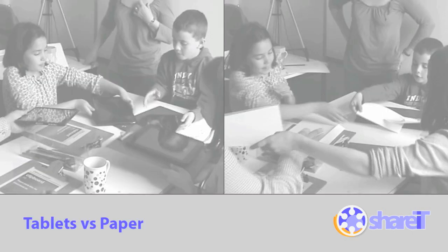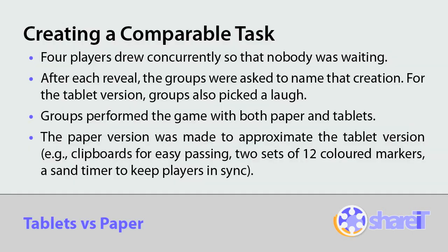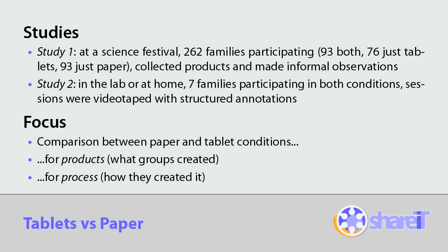We developed an iPad app based on that game and used it to compare tablet and paper use. We built on the Consequences game, having players draw simultaneously and including a naming task at the end, closely matching the tablet and paper versions. We conducted two studies of families playing both versions: the first at a science festival with plenty of players, the second a detailed analysis of seven family groups. We analyzed both the group products and process.